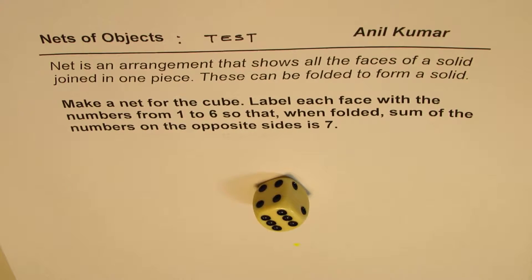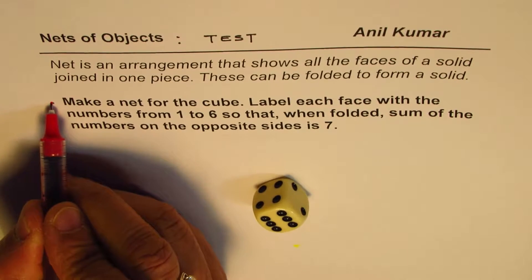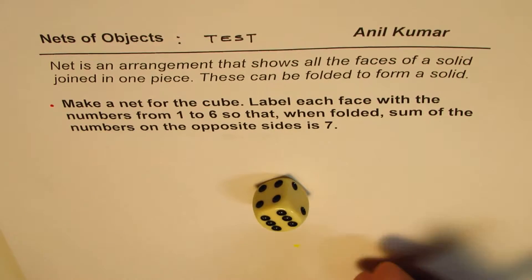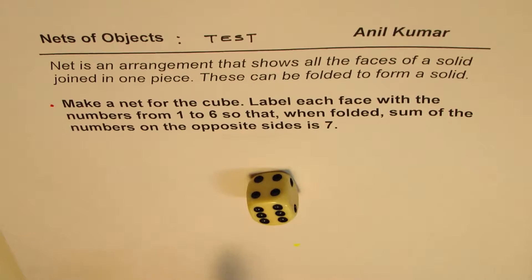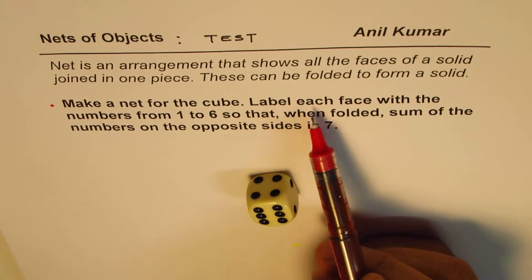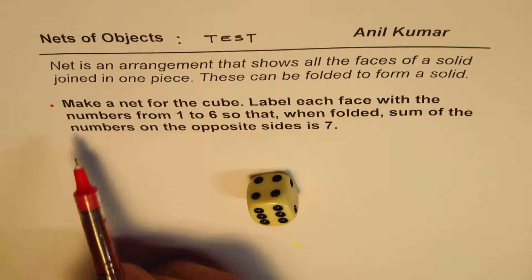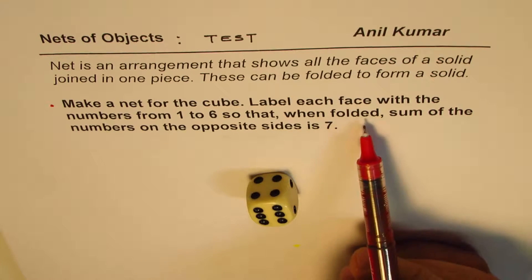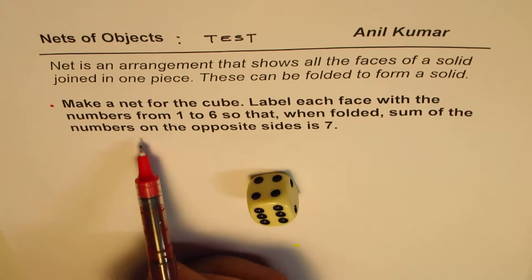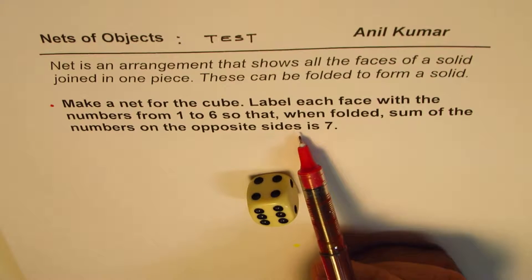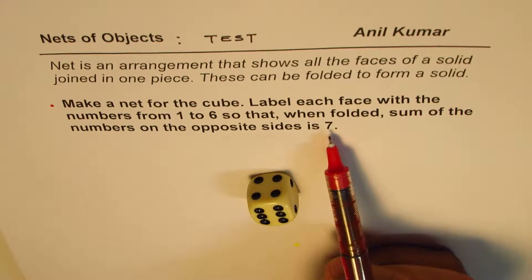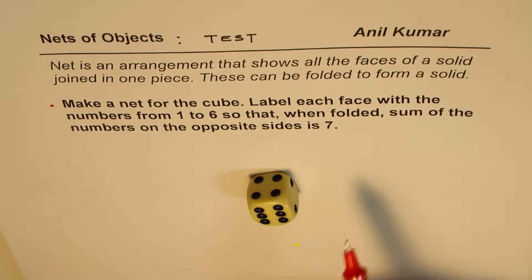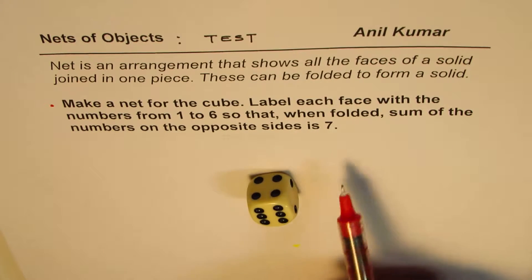The question here is make a net for the cube. Label each face with the numbers from 1 to 6 so that when folded, the sum of the numbers on the opposite sides is 7. That's an exercise for you.